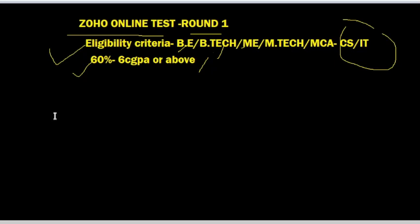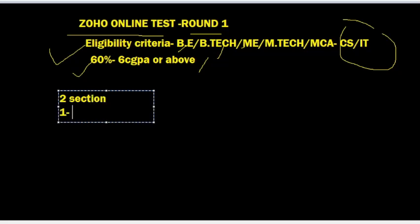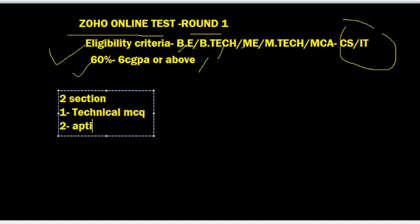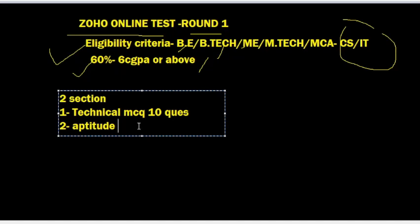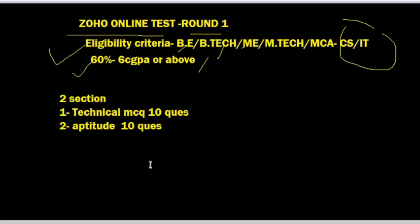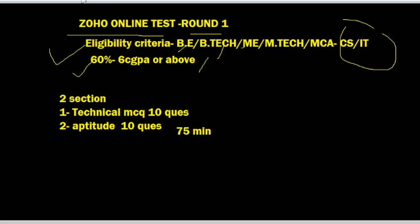Now talking about the online test sections. There will be two sections: the first one is programming, which we can call technical MCQ, and the second one is aptitude. For technical MCQ there will be 10 questions, and for aptitude the same — 10 questions. The time duration is 75 minutes total, with 20 total questions and 10 questions for each section.